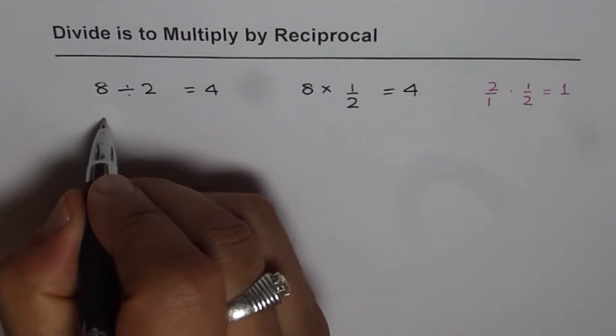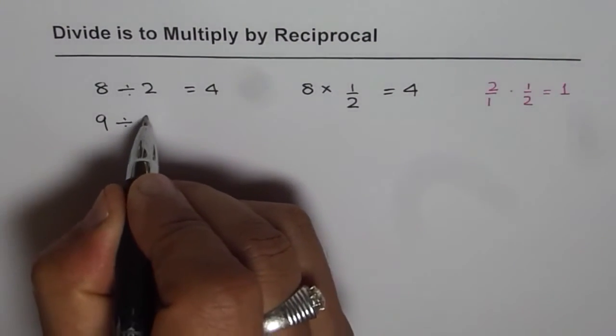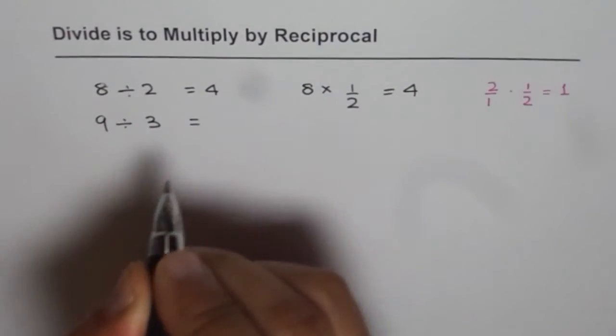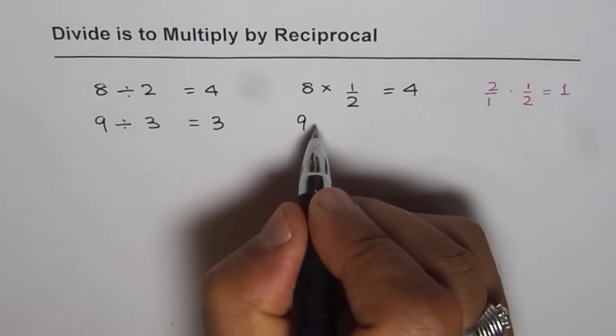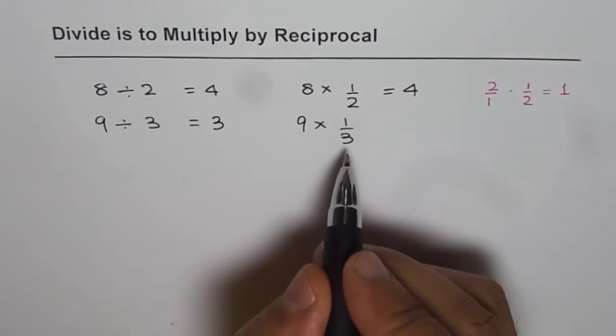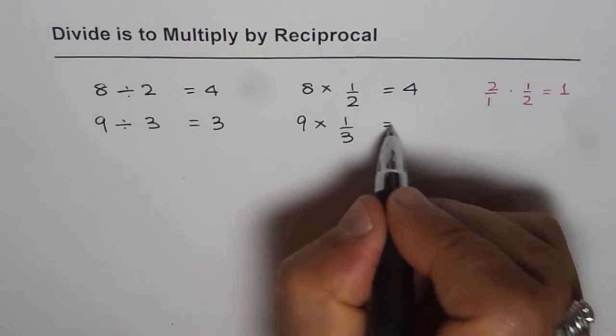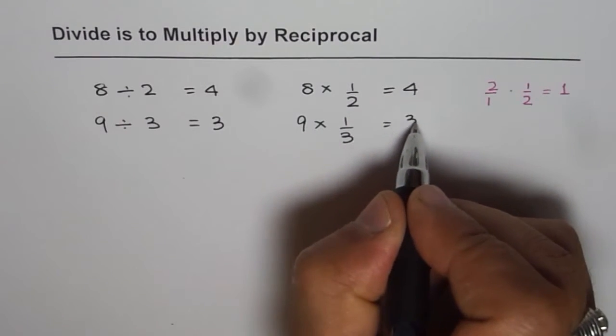Now let us do another example. What is 9 divided by 3? 9 divided by 3 is 3. How about 9 times 1 over 3? 1 third of 9 is also 3.